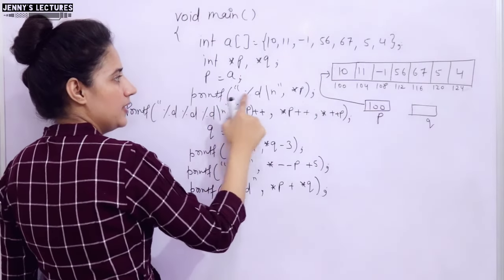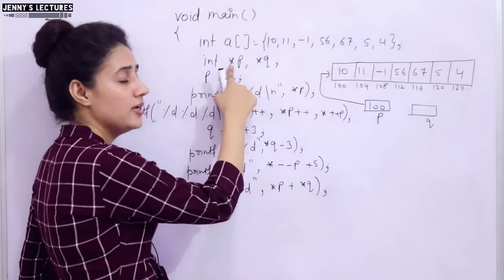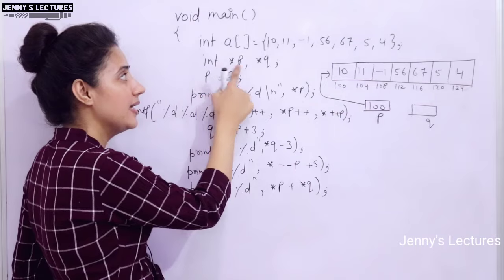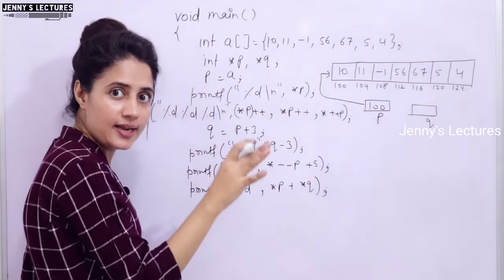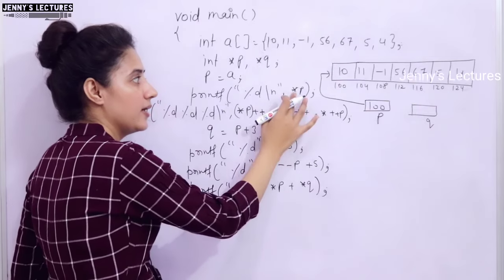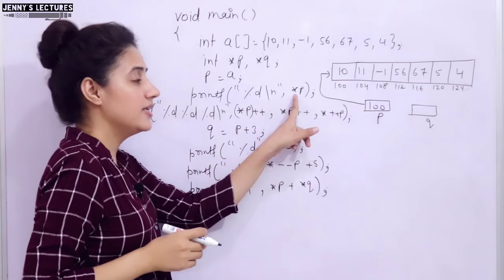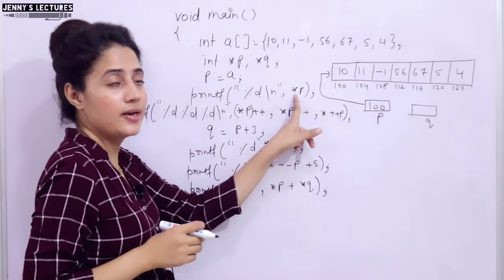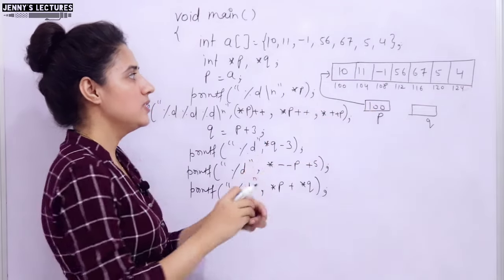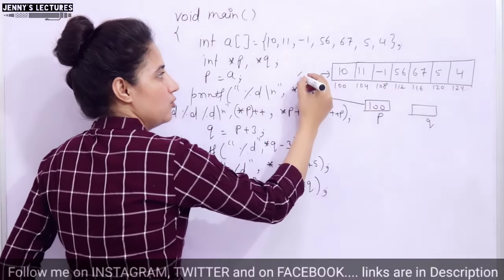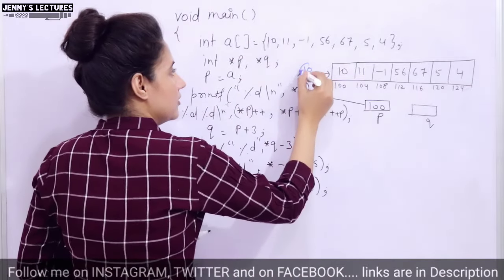If we print using printf with %d and *P — asterisk P means the indirection operator here. Note that in the declaration, asterisk is not acting as the indirection operator, but after declaration when you use asterisk with a pointer name it acts as the dereferencing operator, giving the value at that address. In P we have 100, and the value at 100 is 10. So this first line will give you 10.